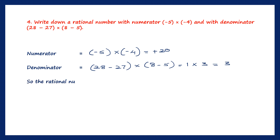Now we have to write the rational number as numerator by denominator. We got the numerator as 20 and the denominator as 3. So the rational number is 20 by 3.